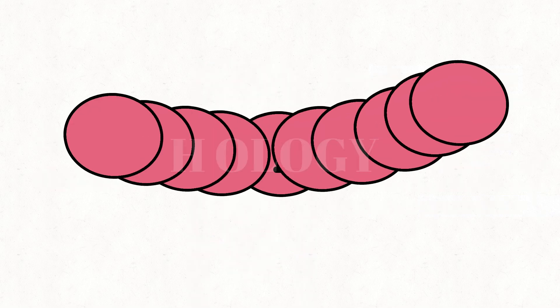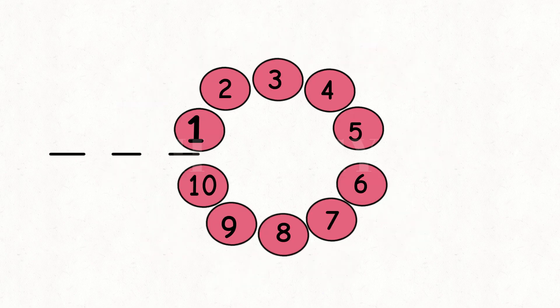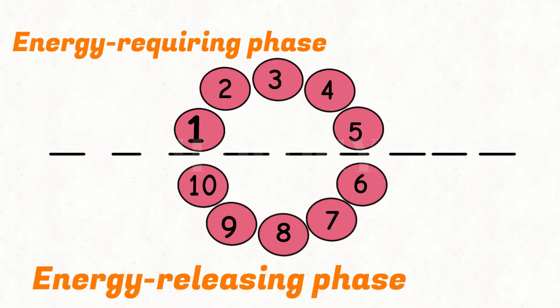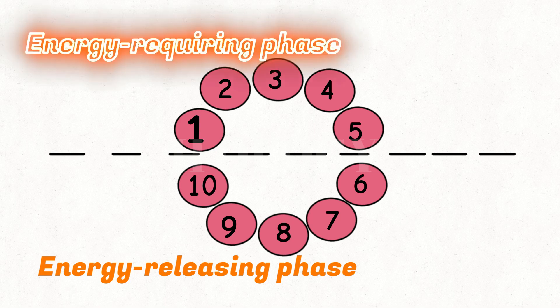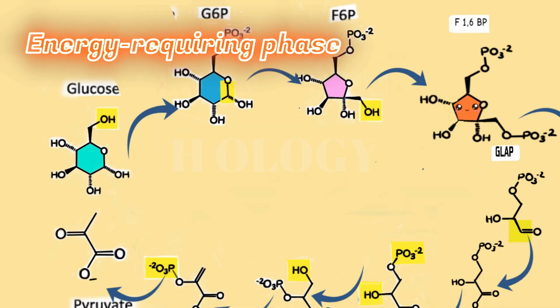There are 10 enzymes involved in breaking down sugar. The 10 steps of glycolysis are organized by the order in which specific enzymes act upon the system. Glycolysis consists of two main phases: the energy-requiring phase and the energy-releasing phase. The first half of glycolysis is the energy-requiring phase, and the second half is the energy-releasing phase.